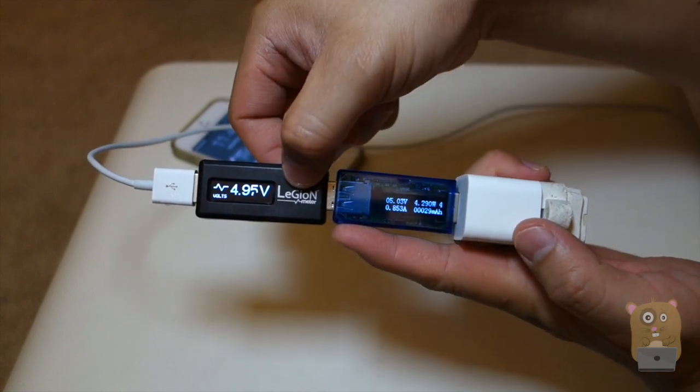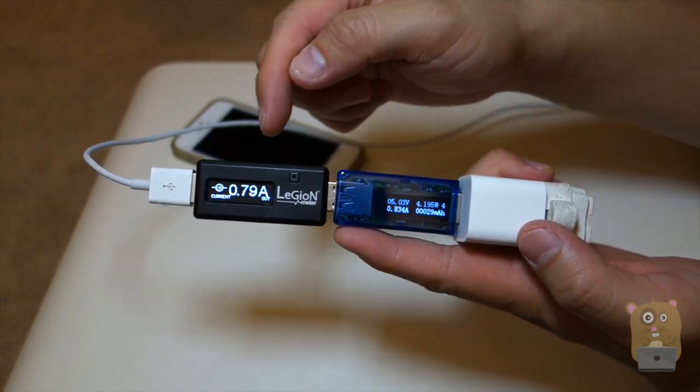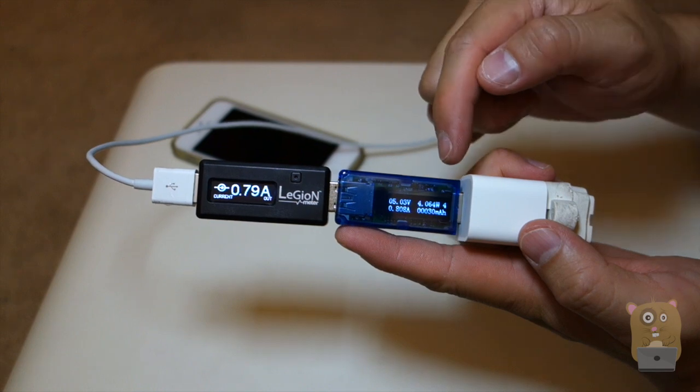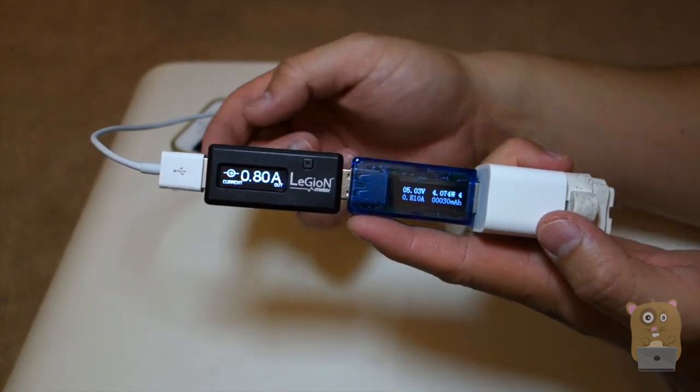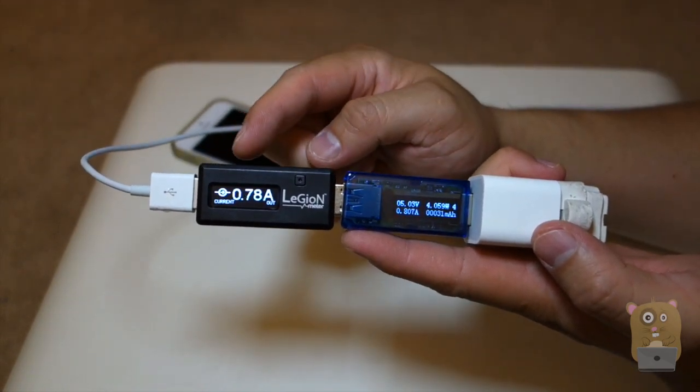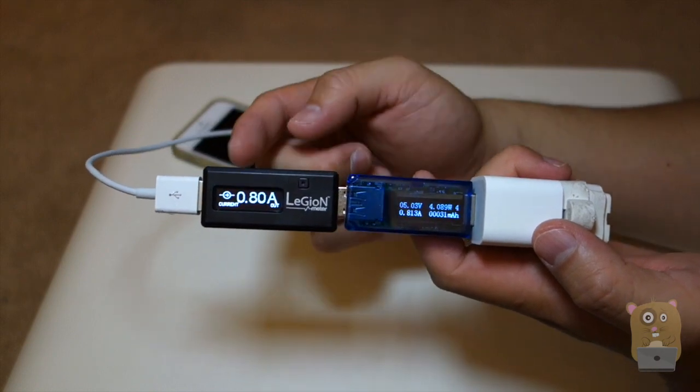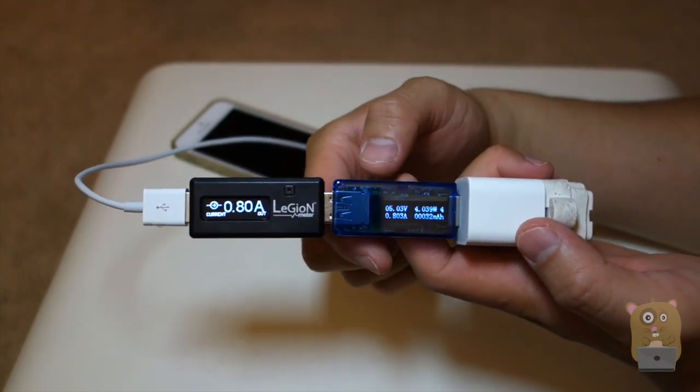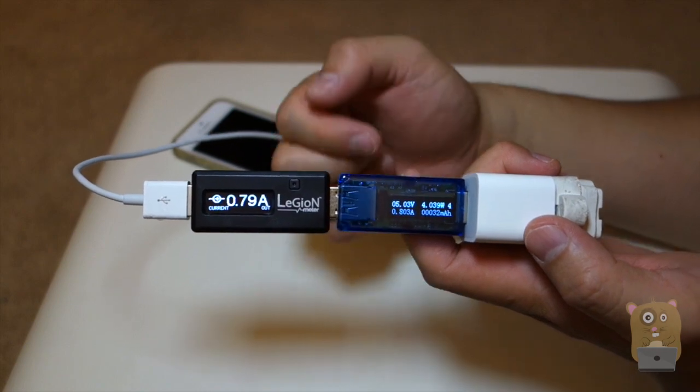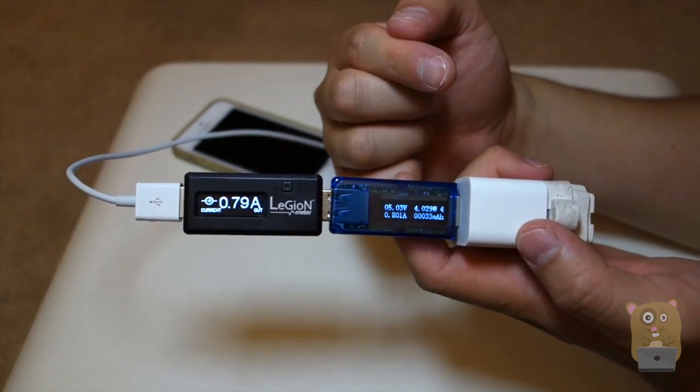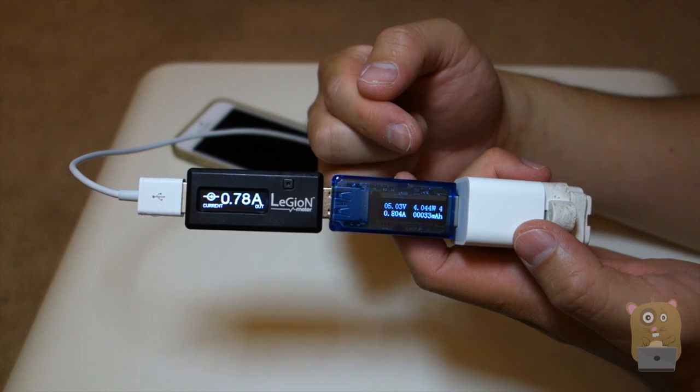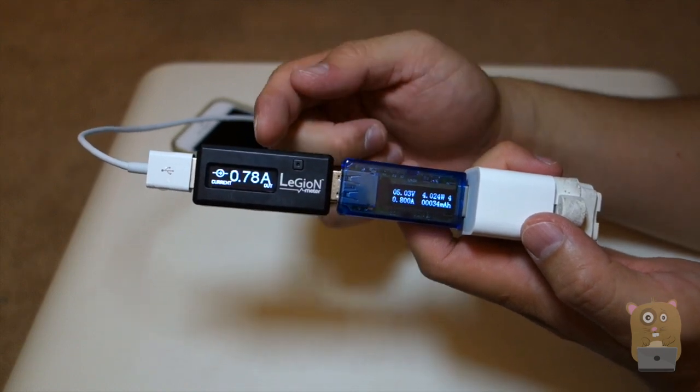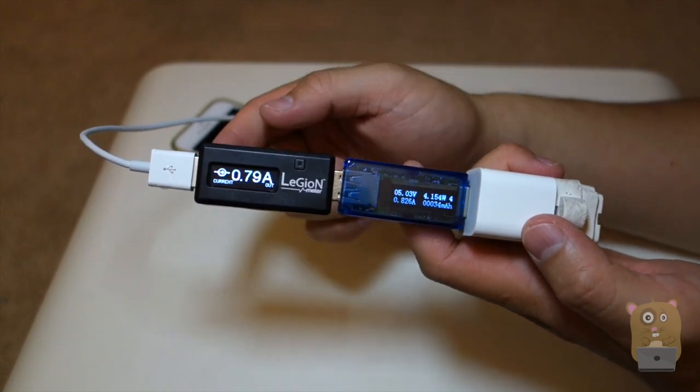I'm going to switch over, about 0.8 amps or so on the DROC. But of course there'll be a little bit less current on the Legion meter because it's later down the chain. The DROC measures in three decimal places to the thousandths, whereas my previous meter only measures to the hundredths.